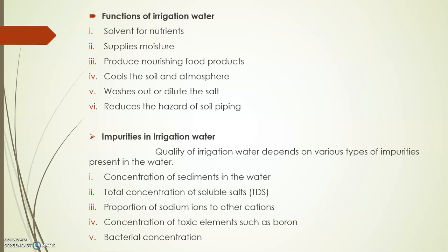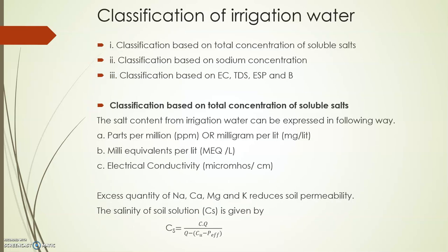So that covered the impurities and quality of irrigation water. Now we'll discuss the classification of irrigation water. There are three main classification types: based on total concentration of soluble salts, based on sodium concentration, and based on electrical conductivity, total dissolved solids (TDS), exchangeable sodium percentage (ESP), and boron. Salt concentration in irrigation water can be expressed as ppm (mg/L), milliequivalents per liter, or electrical conductivity in micromhos per centimeter.